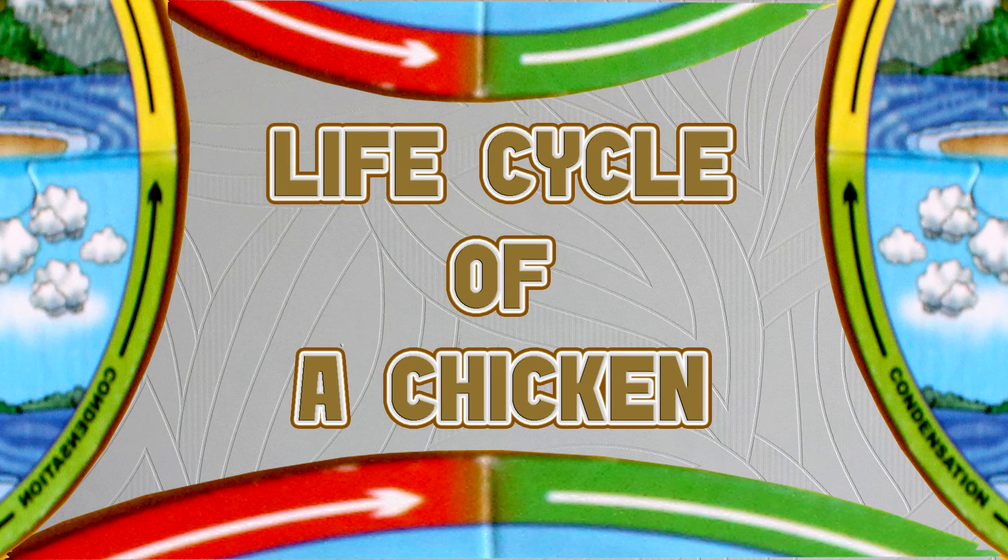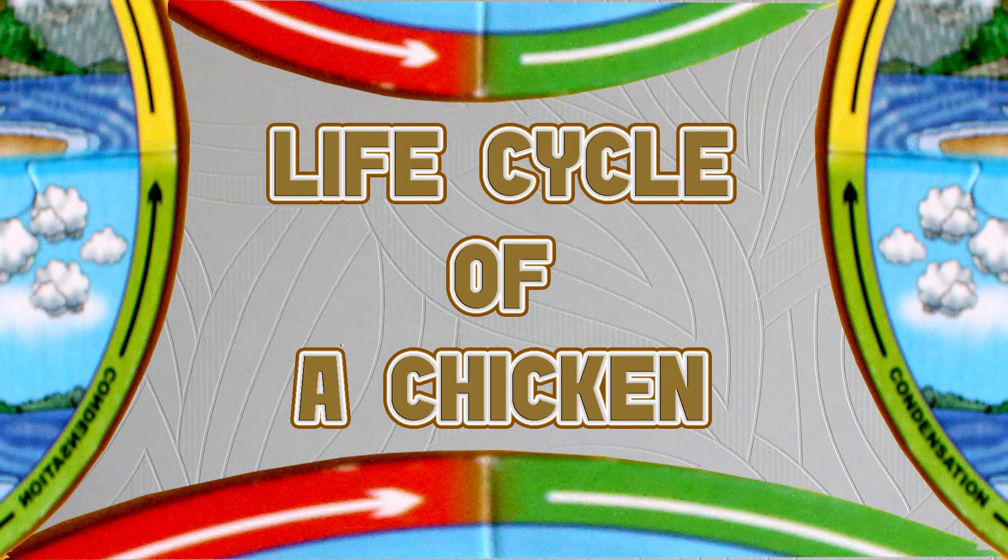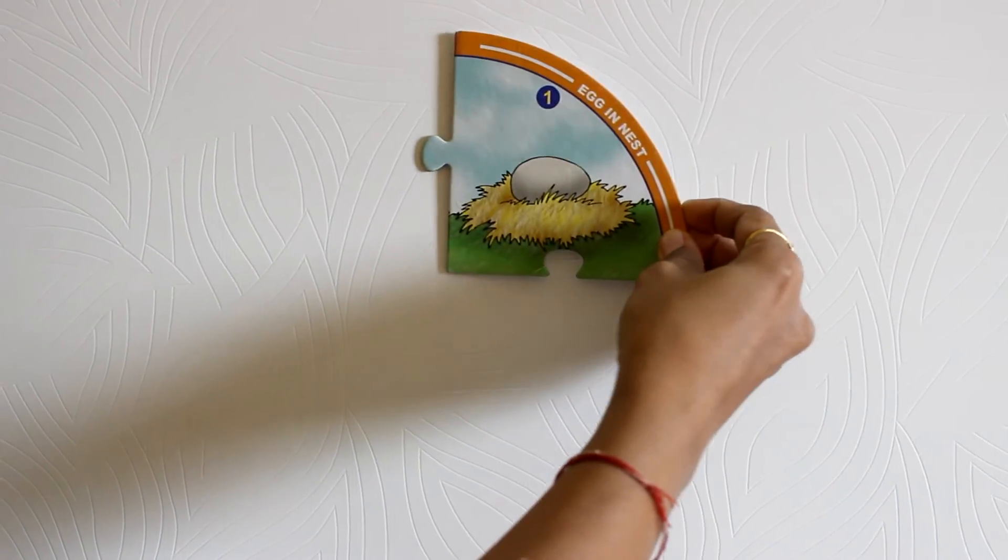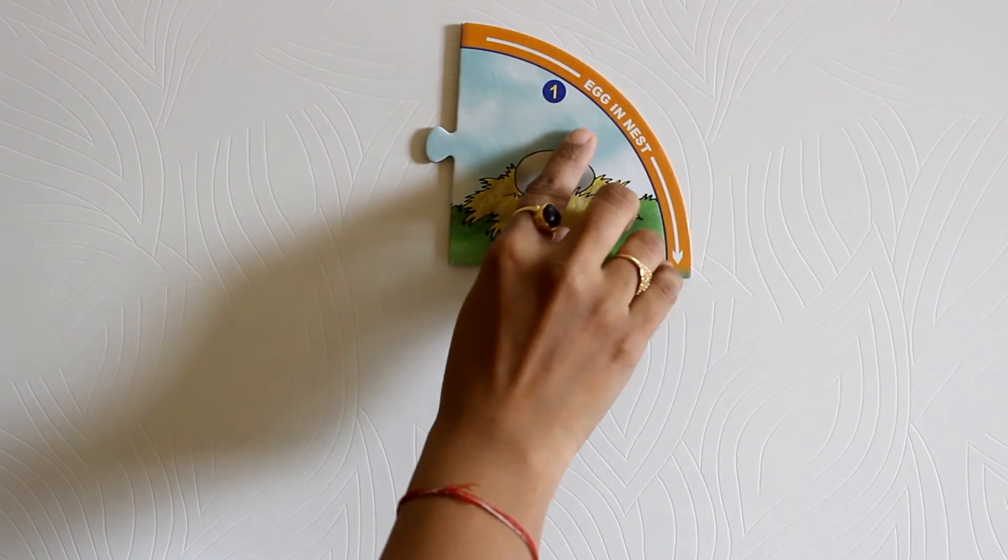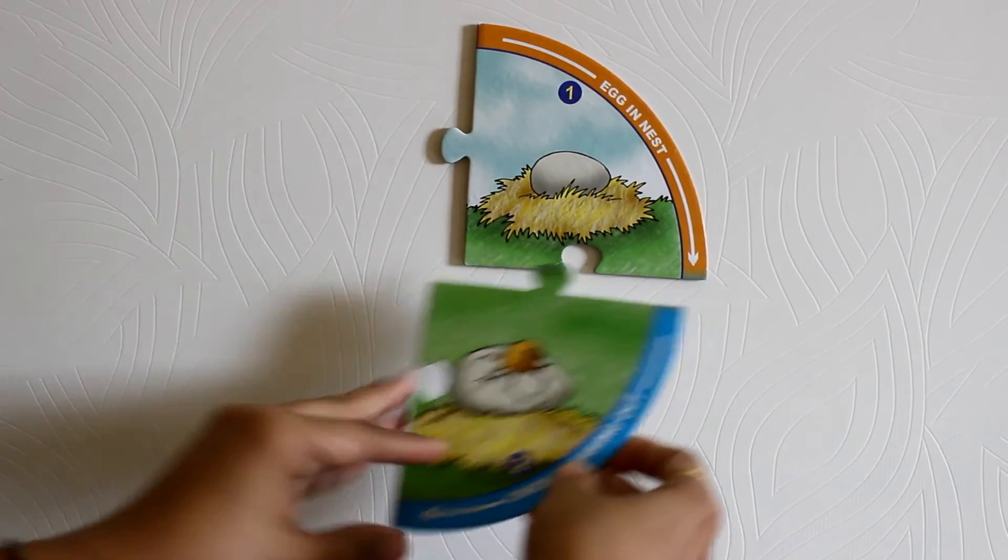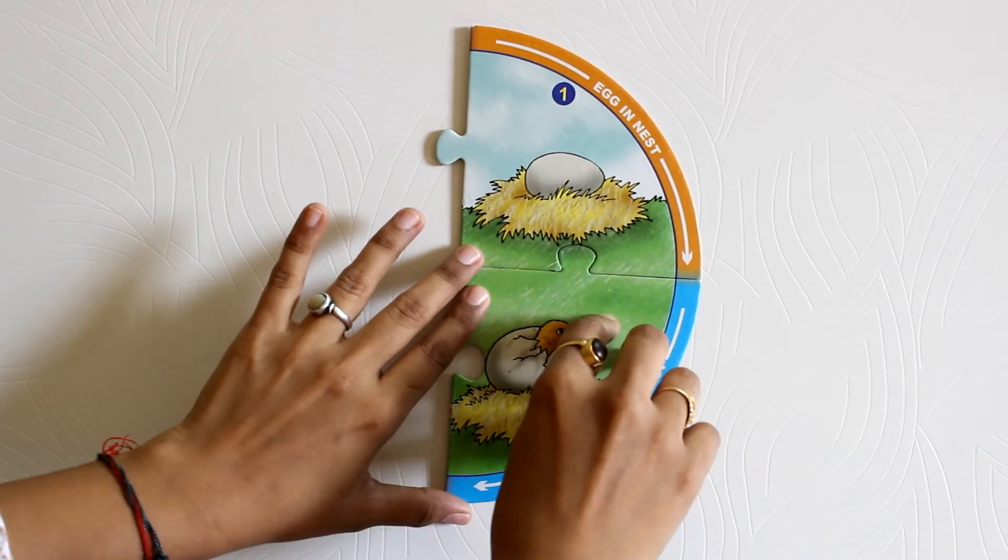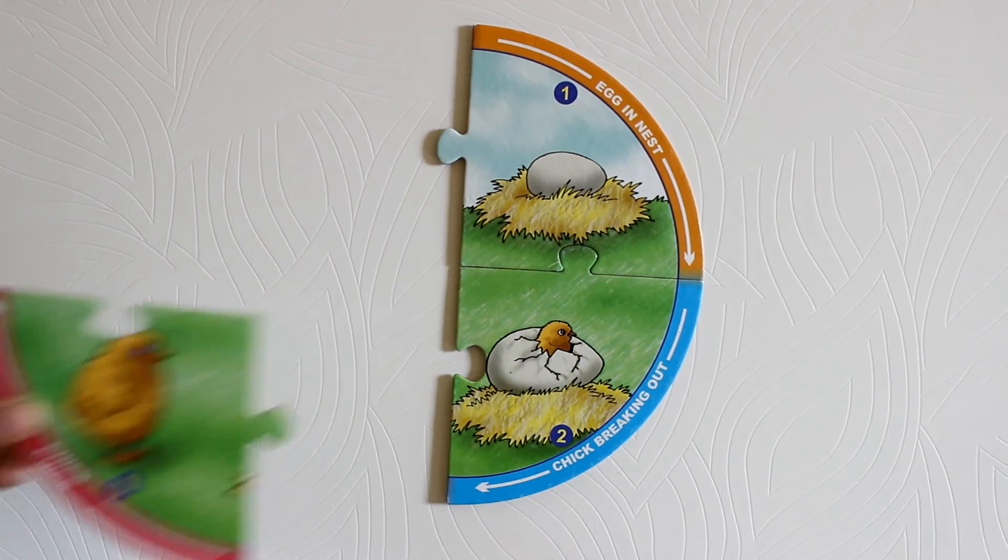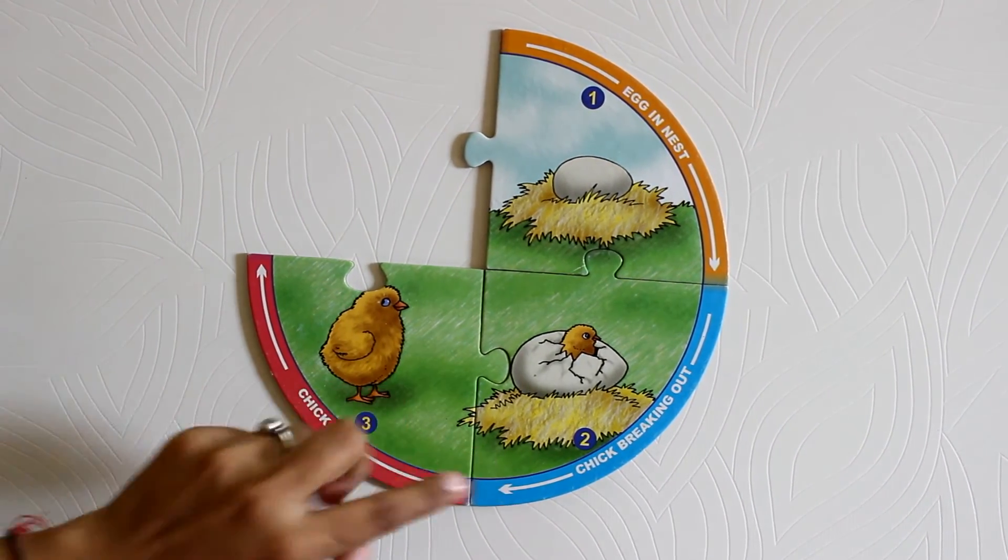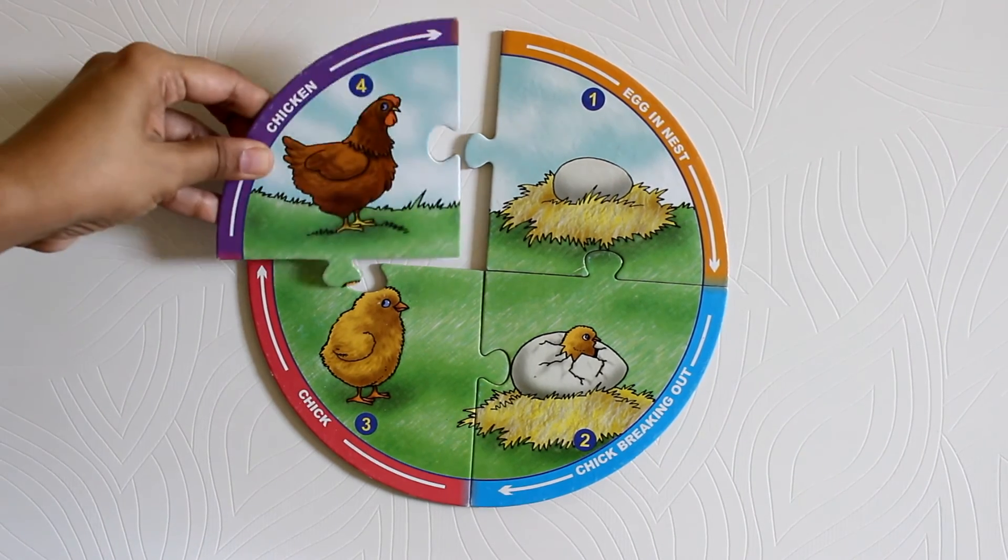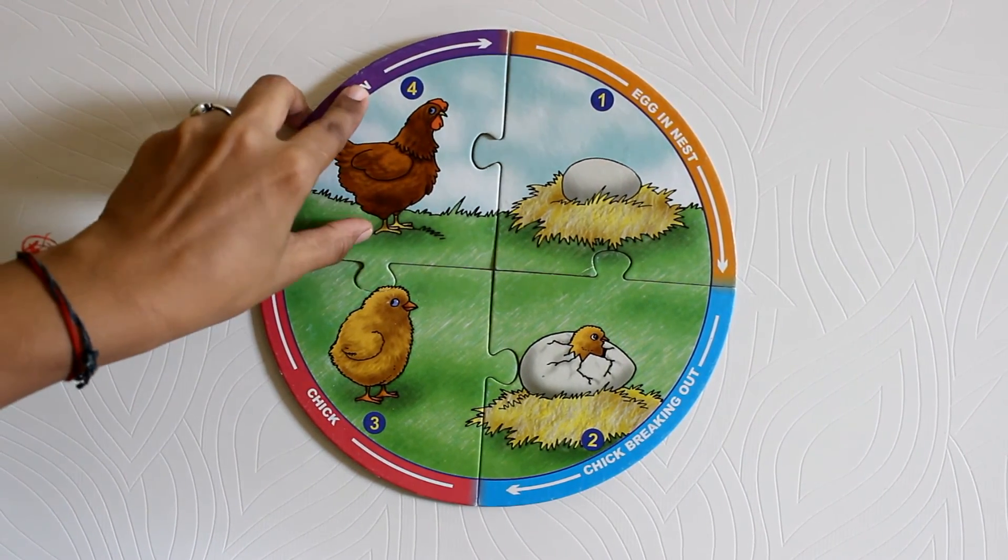The sixth life cycle shows the transformation that takes place in a chicken. Stage one: egg in nest. Stage two: chick breaking out of the egg. Stage three: individual chick. Stage four: adult chicken.